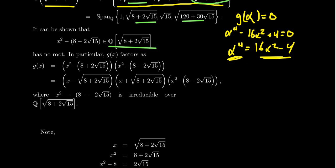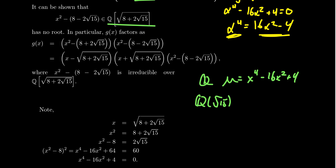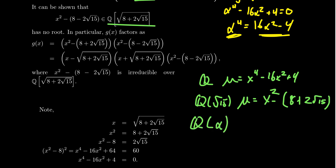So we didn't quite get linear factors for the complete polynomial. The minimal polynomial of α depends on the field. If we're looking at Q, the minimal polynomial is x⁴ - 16x² + 4. If we look at the intermediate field Q(√15), the minimal polynomial of α becomes x² - (8 + 2√15). And of course, if you adjoin α itself, then the minimal polynomial is just x - α. The minimal polynomial depends on which field we're looking at.